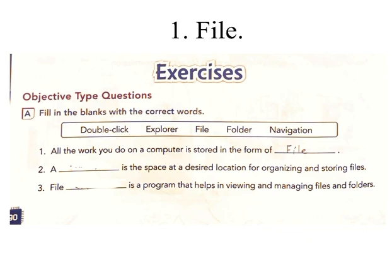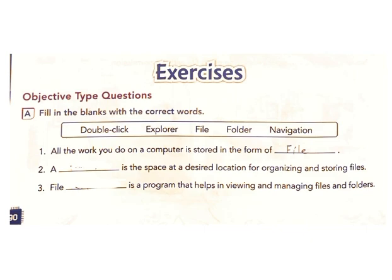1. All the work you do on a computer is stored in the form of — Answer: file. 2. A blank space at a desired location for organizing and storing files is called — Answer: folder. 3. File Explorer is a program that helps in viewing and managing files and folders — Answer: explorer.